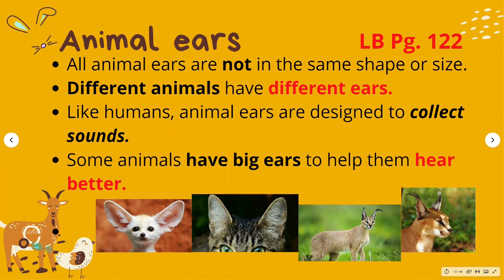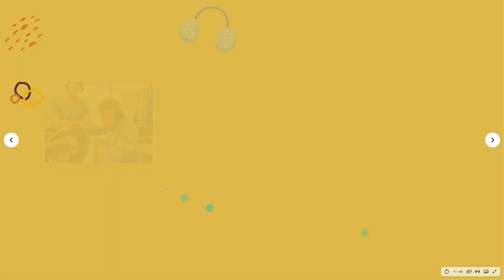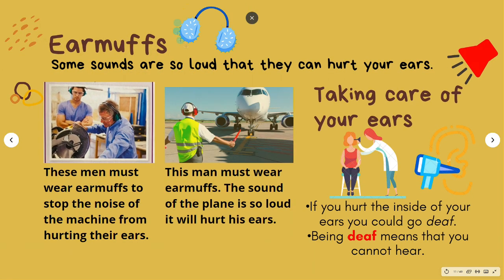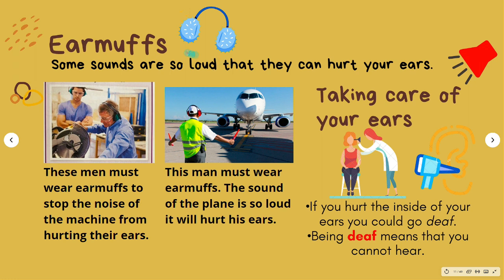Some sounds are so loud that they can hurt your ears. This is an earmuff. Earmuffs are objects designed to cover a person's ears for protection against cold or noise. This man must wear earmuffs to stop the noise of the machine from hurting his ears. Also, this man must wear earmuffs because the sound of the plane is so loud it will hurt his ears.